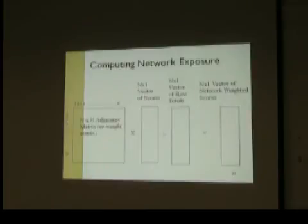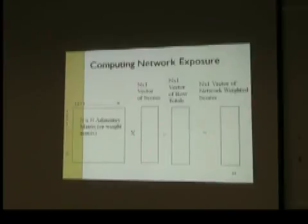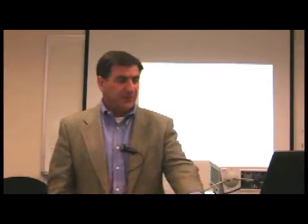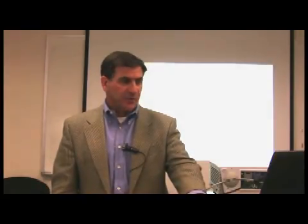We can calculate network exposure using mathematical tools. We have a network, which is typically stored as a matrix of who's connected to whom. We can multiply that matrix by a vector of scores — let's say attitude towards new technology — divide it by the number of connections a person has, and we get a new score, which is a network exposure weight. This is a very simple mathematical manipulation to calculate network exposure, which we can do for diseases, behaviors, attitudes, and virtually any attribute we're interested in.